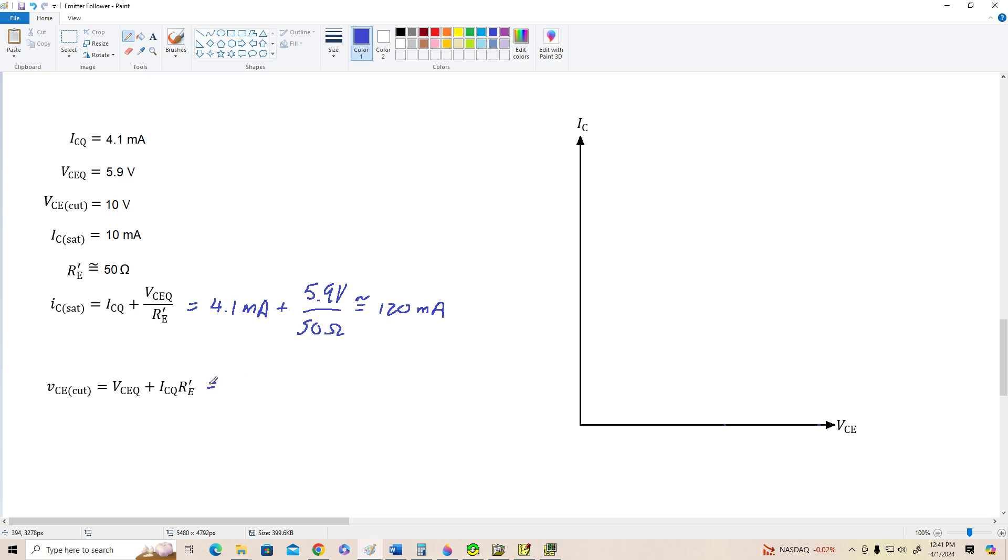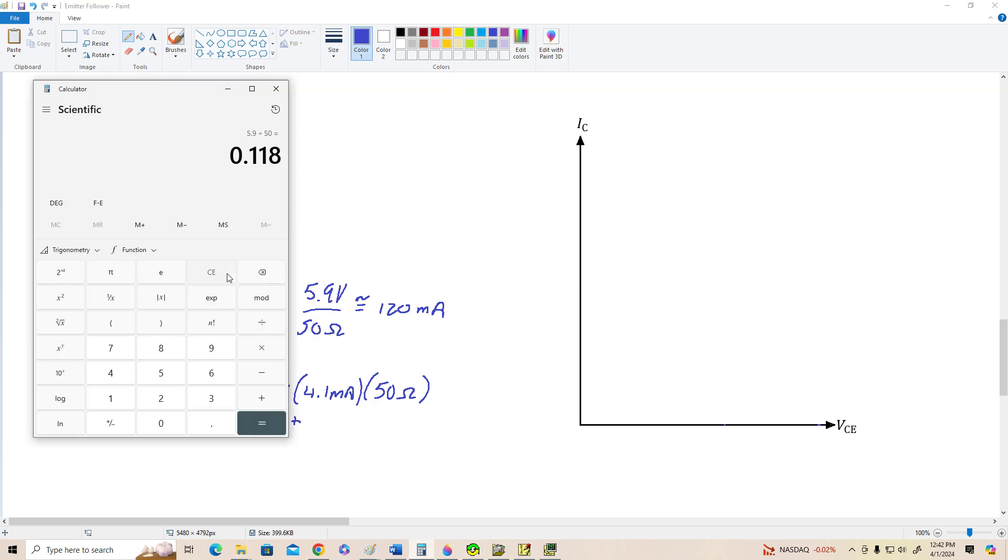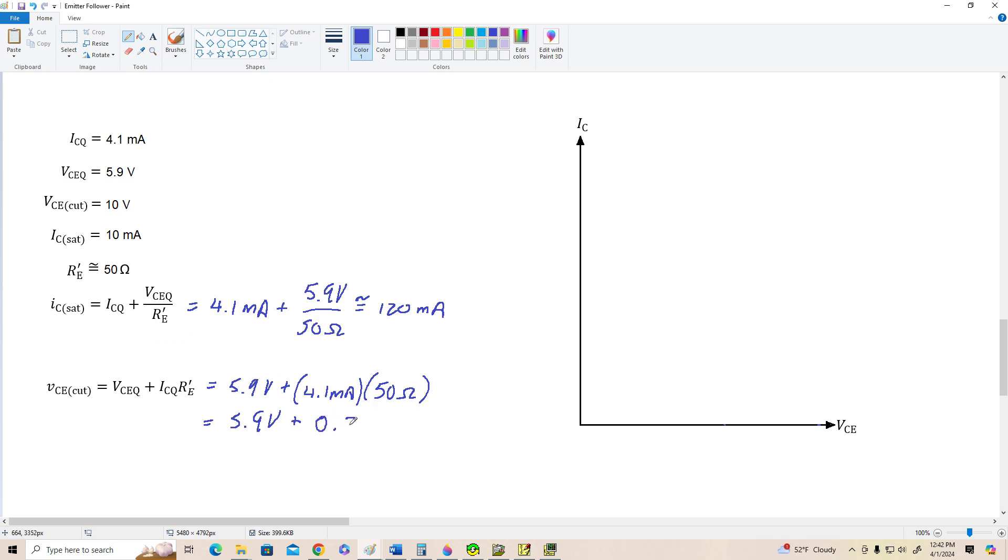But let's go on down and find VCE cutoff. That's VCEQ 5.9 volts plus ICQ of 4.1 milliamps times 50 ohms. So 5.9 volts plus 4.1 milliamps times 50 ohms is about 0.2 volts. There we see a problem already.